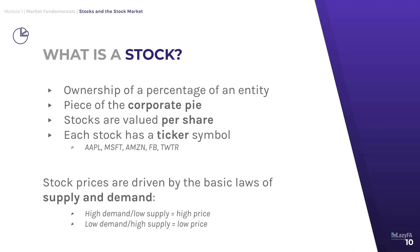A stock simply represents ownership of a percentage of an entity — usually a corporation, some kind of business. A stock represents a piece of the corporate pie valued per share. The company gets split up into a bunch of different pieces, and each one of those pieces is sold as a share of the company in the stock market. Each stock has a price per share, and each stock also has a ticker symbol which uniquely identifies it.